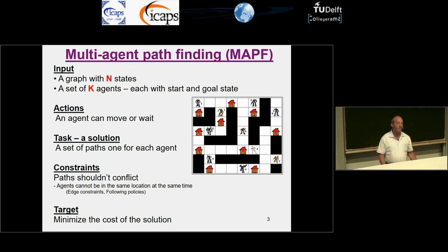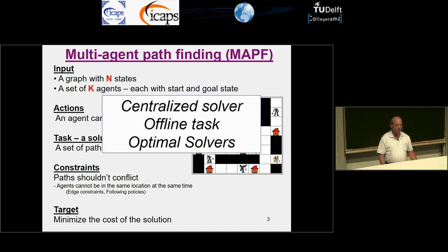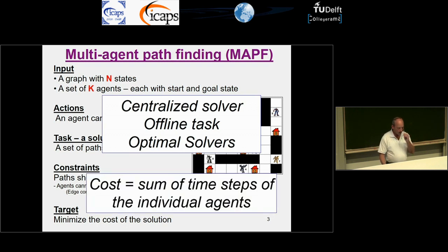The target is to minimize the cost of the solution. We are talking about a centralized solver that is solving it offline, and we are seeking optimal solutions only. The cost we want to minimize is the sum of the time steps of the individual agents getting from their start state to their goal state.